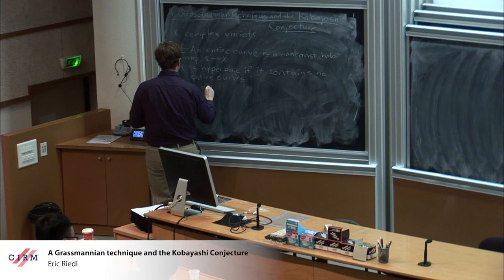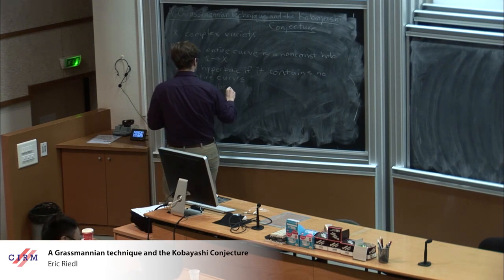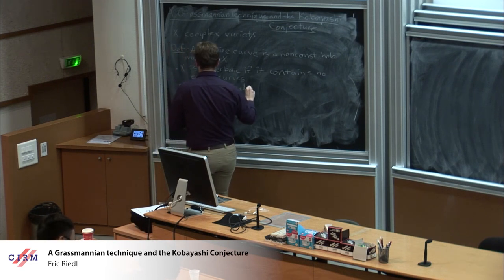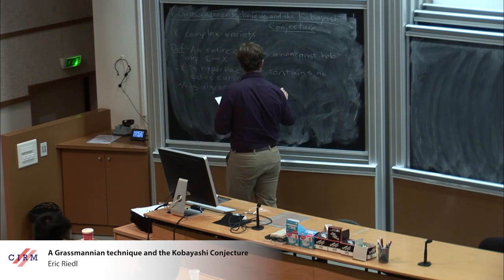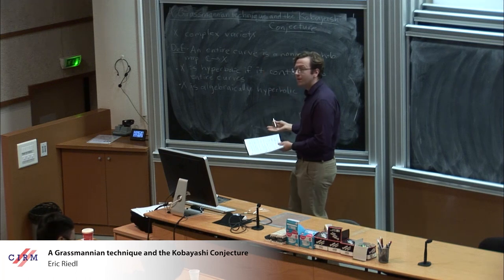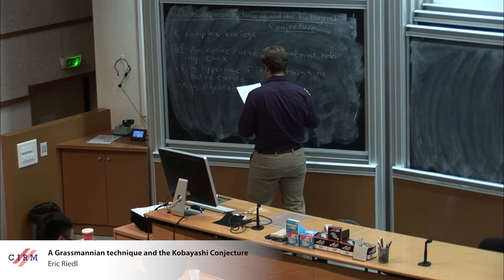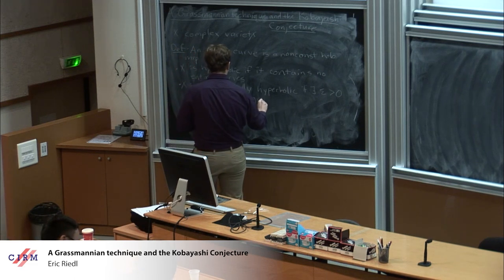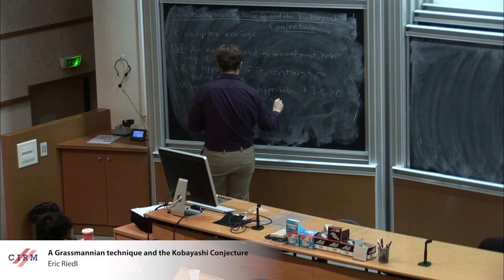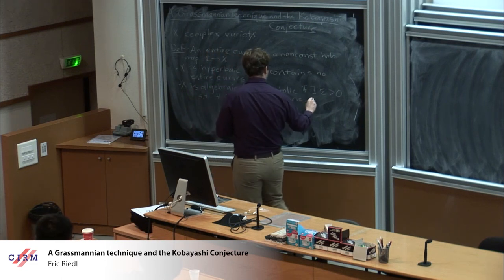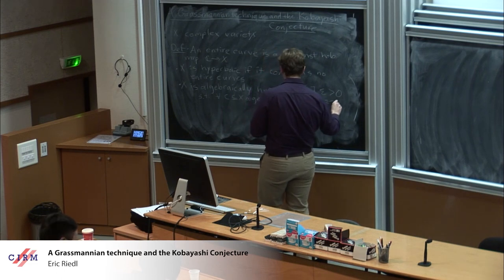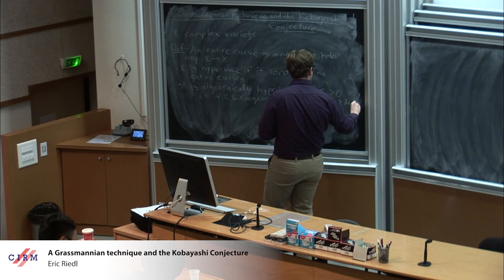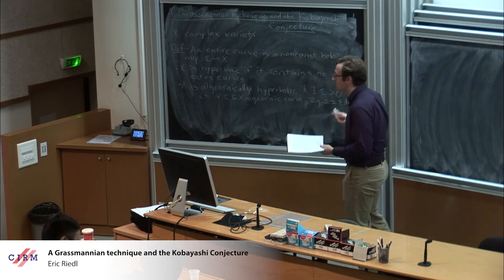X is algebraically hyperbolic if, roughly speaking, large degree curves have to have high genus. So if there exists some epsilon greater than zero such that for all C in X, an algebraic curve, 2g(C) minus 2 is at least epsilon times the degree of C, where the degree is defined with respect to some polarization.